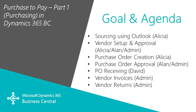Next, we'll log in as Alan. He's in the accounting area. He'll be reviewing the vendors and the purchase orders and then send them for approval. We'll look at the admin person. He'll be approving the vendors and the purchase orders and also creating the vendor's invoices. And we'll also be looking at David. David works in the warehouse and will be receiving the items.